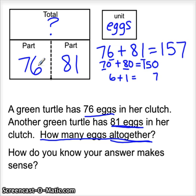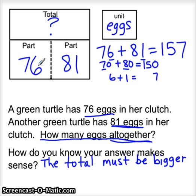How do we know our answer makes sense? The total must be bigger than the parts. Since the first part is 76 and the second part is 81, our answer makes sense because 157 is bigger than both parts.